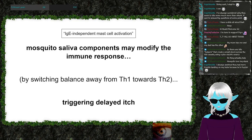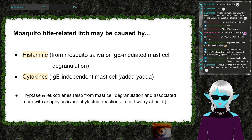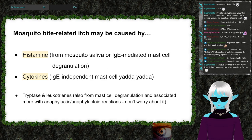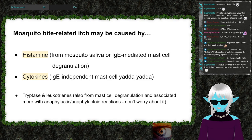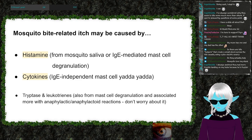To summarize the itch mechanisms: mosquito bites cause itching either through histamine directly from the mosquito's saliva, or as an immune reaction involving the body's own histamine triggered by other components in the saliva - through IgE-mediated mast cell degranulation or cytokines through IgE-independent pathways. There are also other mediators like tryptase and leukotrienes, but those are less relevant here.